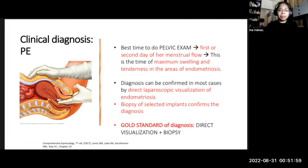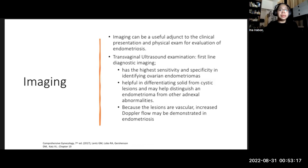Diagnosis can be confirmed in most cases by direct laparoscopic visualization of endometriosis and biopsy of endometriotic implants or lesions. Imaging can be a useful adjunct to clinical presentation and physical exam. Transvaginal ultrasound should be the first-line diagnostic imaging as it has the highest sensitivity and specificity in identifying ovarian endometriomas. It is helpful in differentiating solid from cystic lesions and distinguishing endometrioma from other adnexal abnormalities. Because lesions of endometriosis are vascular, increased nuclear flow may be demonstrated.